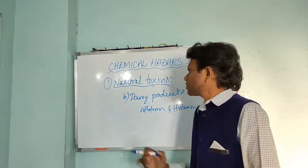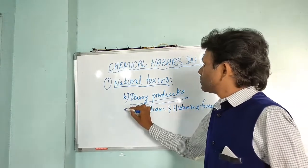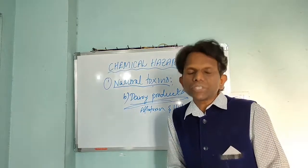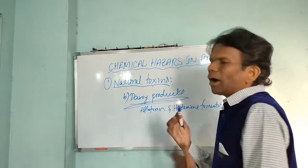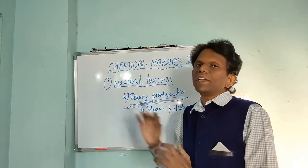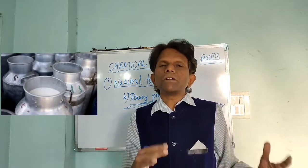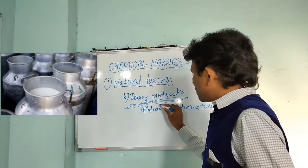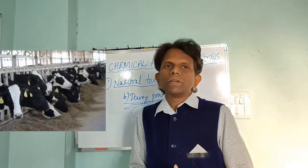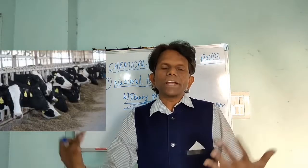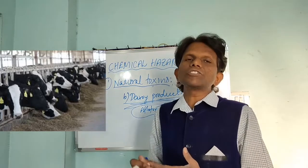The next one is natural toxins in dairy products. In dairy products, especially meat-producing organisms like cow, buffalo, and sheep — these are grazing animals. We must be very cautious about what we feed grazing animals, ensuring the grains are free from mold growth to prevent aflatoxins. If the grains eaten by grazing animals such as cow, buffalo, or sheep contain aflatoxins, the aflatoxins will pass through the animal and the milk will also contain aflatoxins.